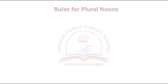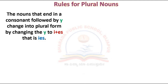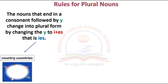Let's look at some more rules. Nouns that end in a consonant followed by 'y' change into plural form by changing the 'y' to 'i' plus 'es' — that is, 'ies'. Examples: country becomes countries.